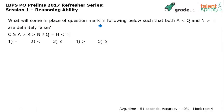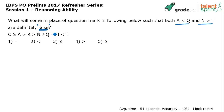What will come in place of the question mark in the following expression such that both 'a less than q' and 'n greater than t' are definitely false? I am 100% sure a lot of you have not paid attention to the word 'false,' and that's what you need to work on. Understand the question properly — he wants 'a less than q' and 'n greater than t' to be false.